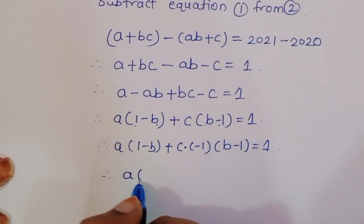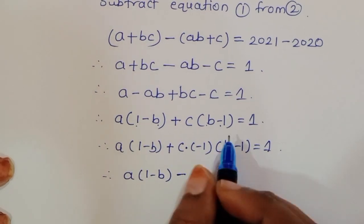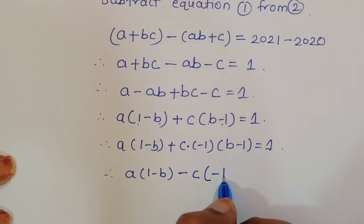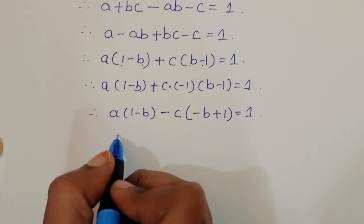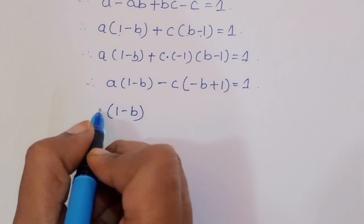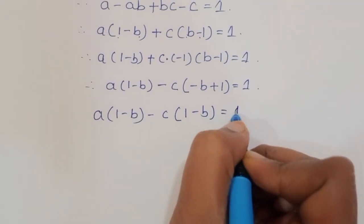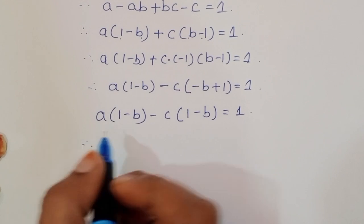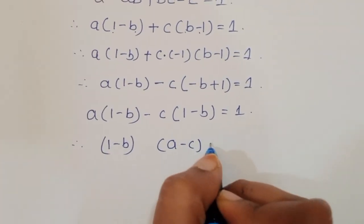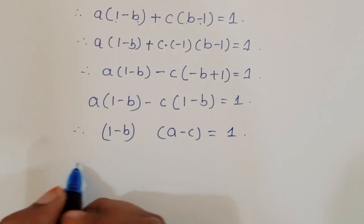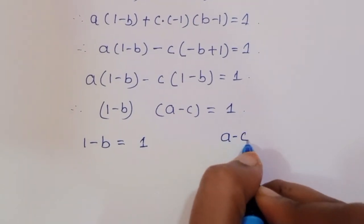Since (b minus 1) = minus(1 minus b), we multiply c's term by minus 1 to get a(1 minus b) minus c(1 minus b) = 1. Factoring out (1 minus b): (1 minus b)(a minus c) = 1.